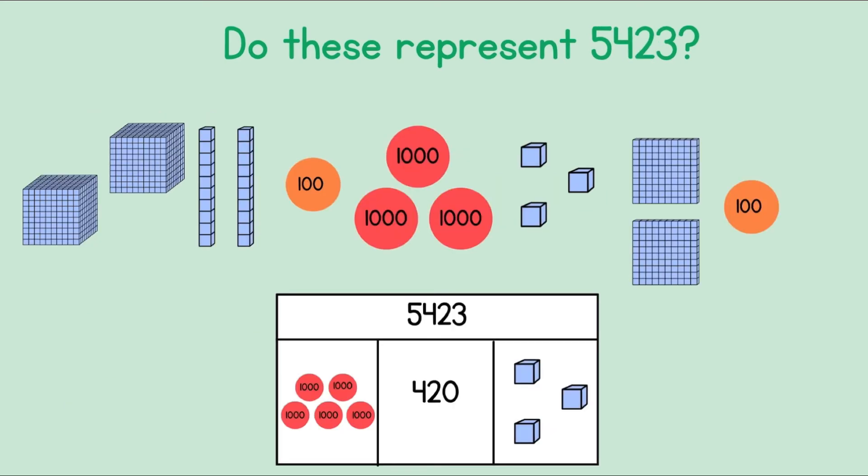Last question. Do these represent 5,423? Look at the first representation very carefully because we have a mix of base 10 blocks and the number counters. Let's count the thousands first. So we have 1,000, 2,000, 3,000, 4,000, 5,000.